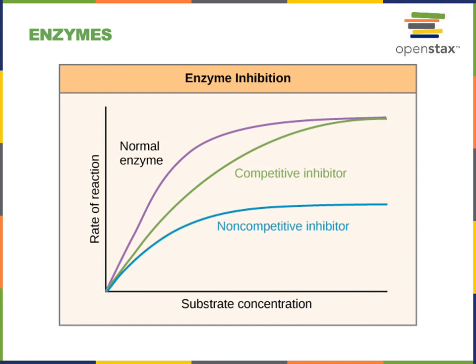Inhibition of an enzyme is when a molecule known as an inhibitor binds to the enzyme and decreases the rate of the chemical reaction normally catalyzed by that enzyme. This graph shows the relationship between substrate concentration and reaction rate for a normal enzyme solution with no inhibitor (purple line), compared to a competitive inhibitor (green) and a non-competitive inhibitor (blue).